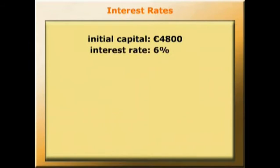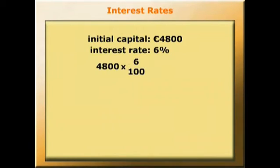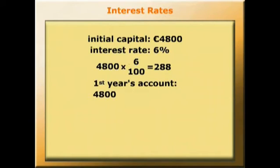So our student has 4,800 euros in the bank. How much will she have in one year's time if interest is 6%? We'll have 4,800 times 6%, that's 6 over 100, equals 288 euros — that's the interest earned. So the account will have the original 4,800 plus the 288 euros earned in interest, which gives us 5,088 euros.